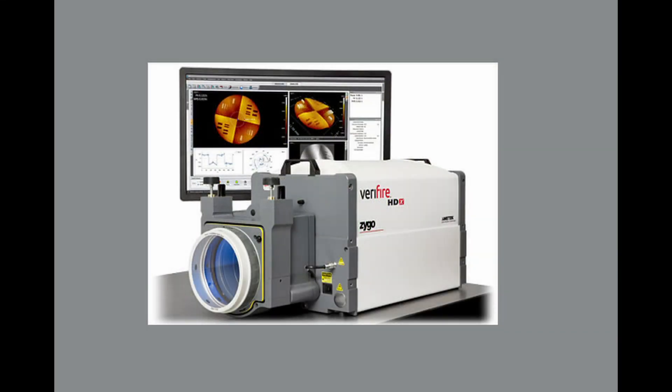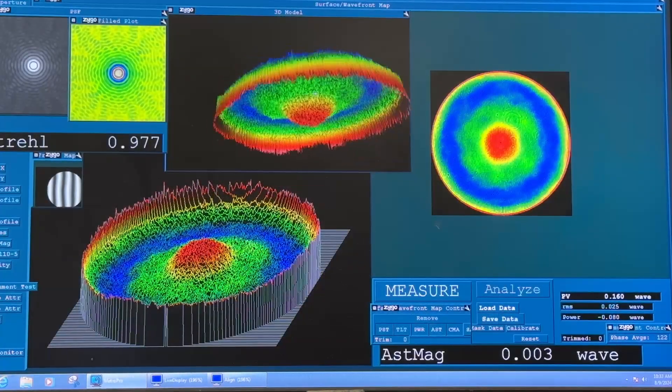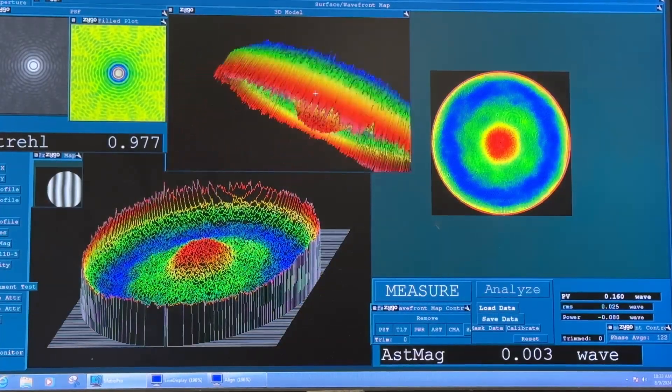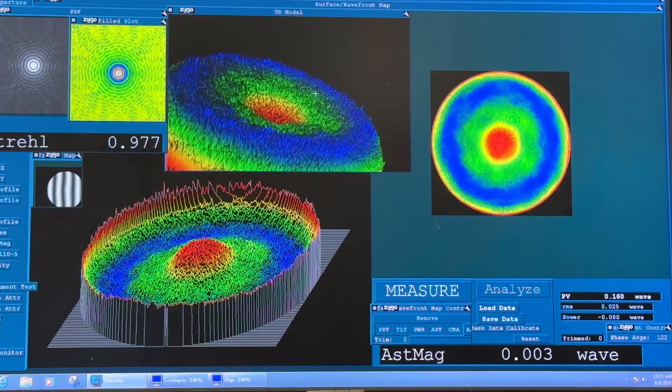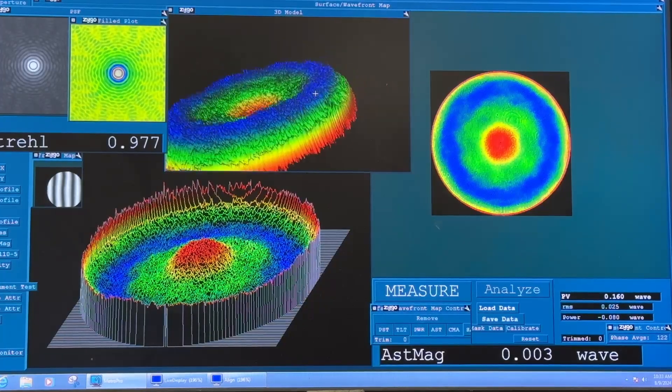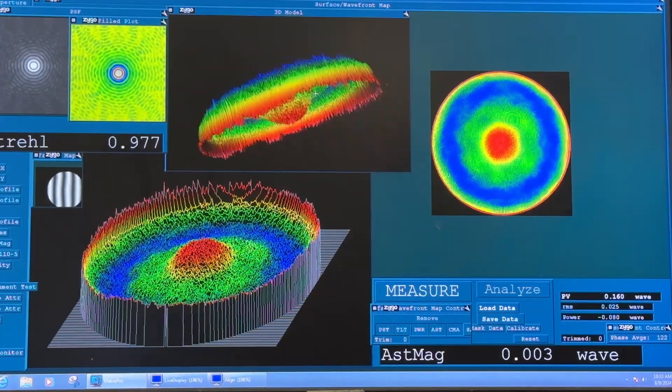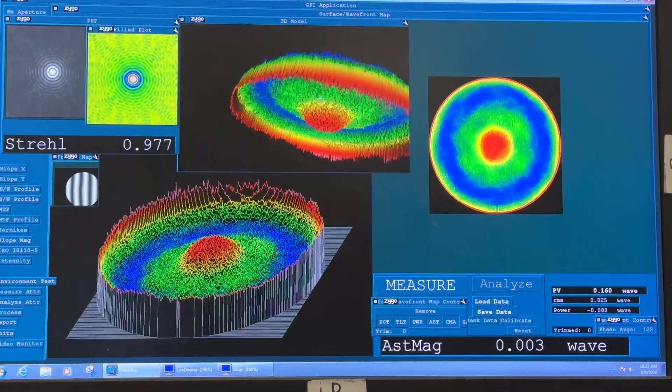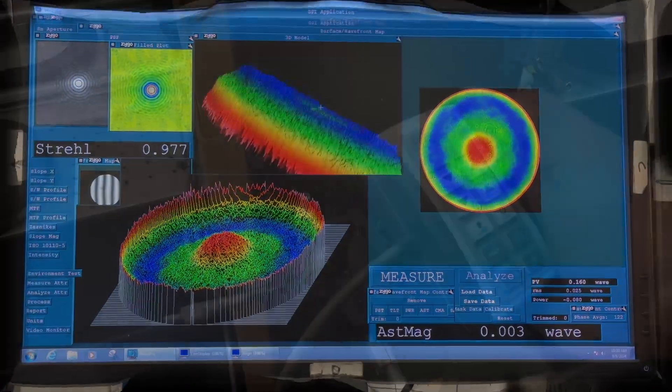We use a Zygo Verifier Phase Shifting Laser Interferometer for optical testing. This instrument has significant advantages over other methods of testing. The Zygo delivers fast, reliable, and quantifiable measurements even in the presence of vibration and air turbulence.